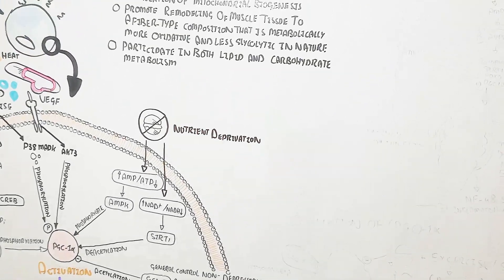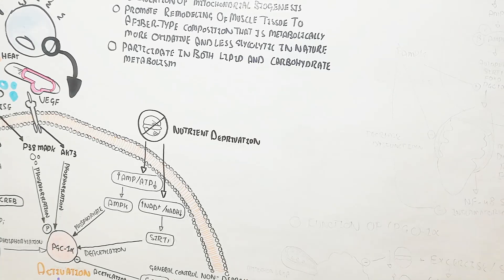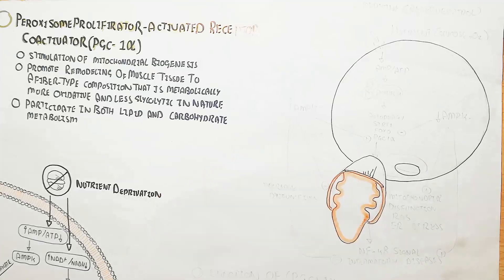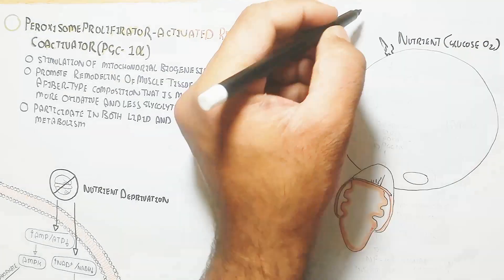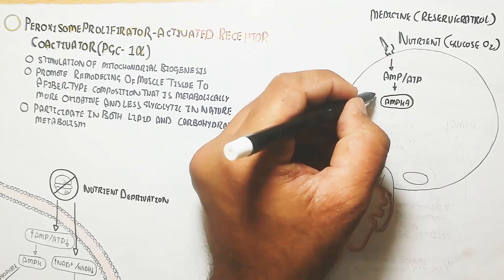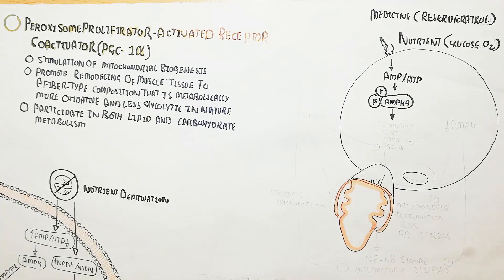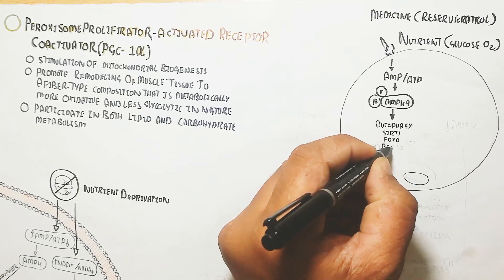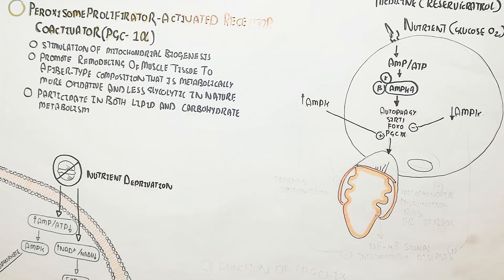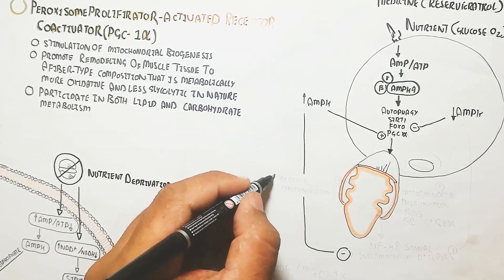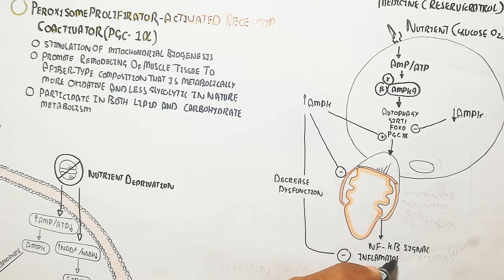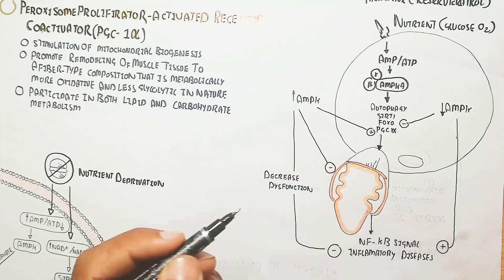AMPK increases during fasting and decreases under nutrient-rich conditions. When nutrients such as glucose and oxygen are deficient, the AMP-to-ATP ratio increases, activating the AMPK alpha, beta, and gamma subunits, which trigger autophagy, SIRT1, FOXO, and PGC1-alpha. Conversely, in nutrient-rich conditions, AMPK decreases and inhibits PGC1-alpha, reducing mitochondrial biogenesis. Fasting thus promotes mitochondrial biogenesis while eating inhibits it.